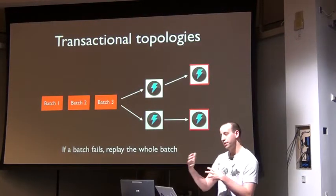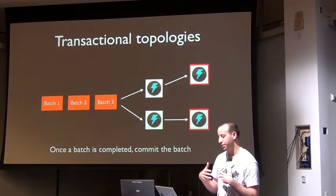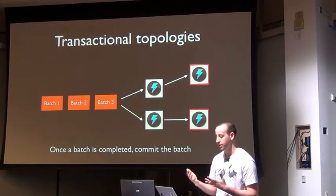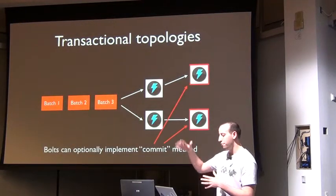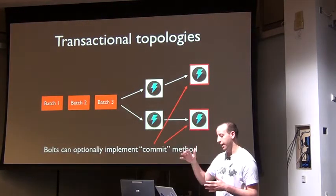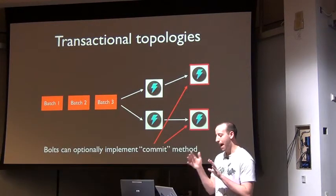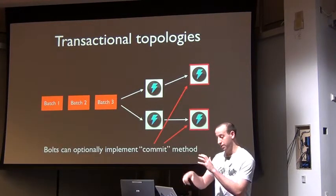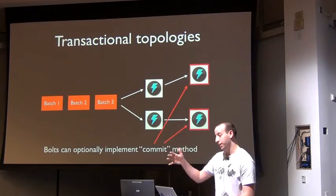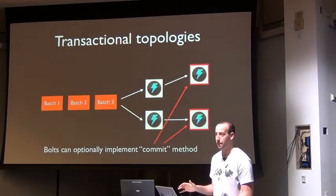Once you've finished processing a batch, that batch enters the commit phase. The idea is that you can have any number of vaults in the topology implement this commit method, and then the batch isn't considered committed until it was successfully processed and then successfully committed by everyone who wanted to commit it.